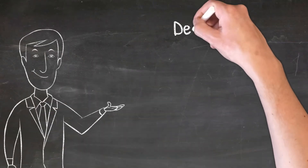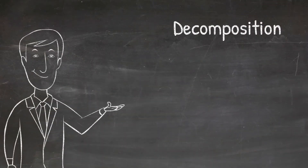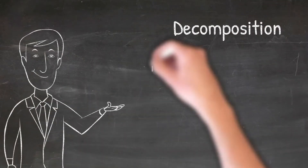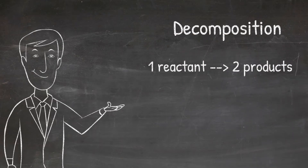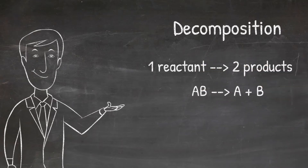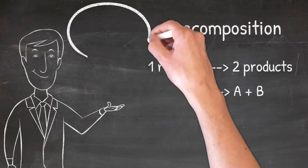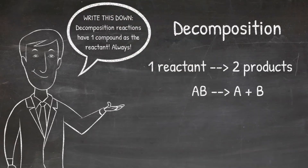The next reaction is decomposition. Decomposition reactions are reactions that are made up of one reactant and two products. If something decomposes, that just means it is breaking down, and that is exactly what happens in a decomposition reaction. The generic equation for a decomposition reaction would be AB yields A plus B, where the compound AB broke down into its different elements A and B. Write this down.